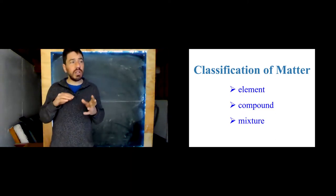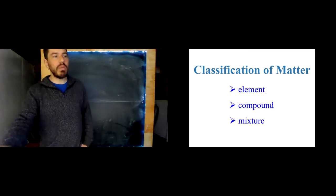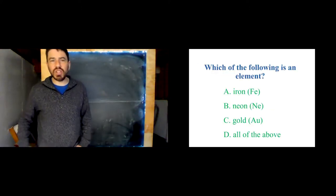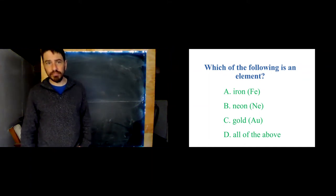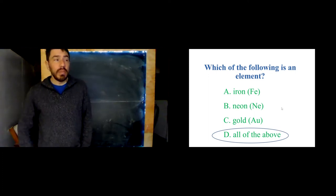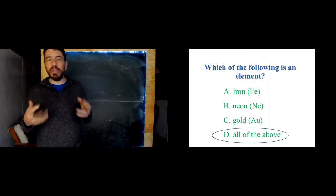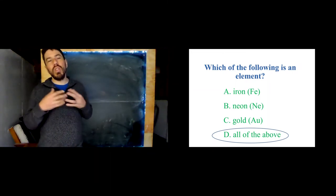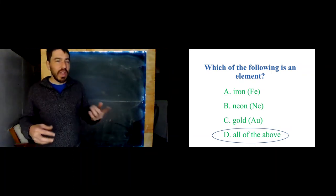Another way to organize matter is in terms of element, compound, and mixture. Let's check for prior understanding — which of the following is an element? Hopefully you said all of these are elements: iron, neon, and gold. They're all only made of one kind of atom, and they don't form compounds with other atoms. That makes them elements.